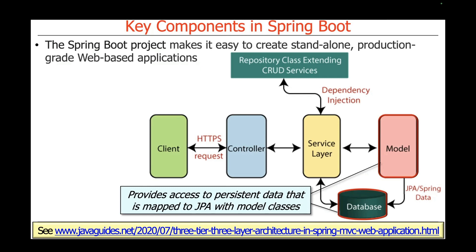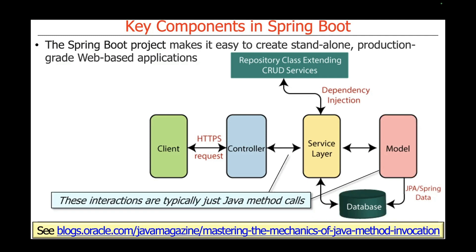We'll also see later how to use asynchronous databases such as R2DBC — that will come later in the course. The interactions between controllers and the service layer, and between the service layer and the model, are typically just standard Java method calls. Spring also works with other languages like Python and JavaScript, but we're focusing on Java to take advantage of its cool concurrency and parallelism features.